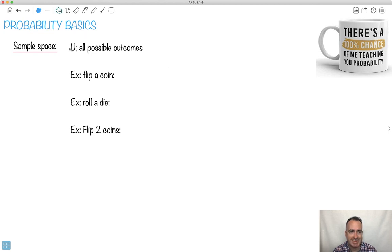The first thing is called the sample space. We call it U, and that's just all the possible outcomes.